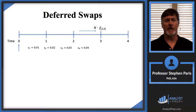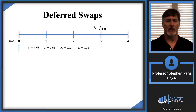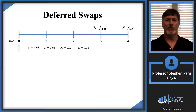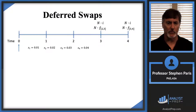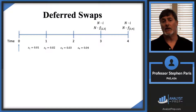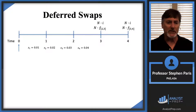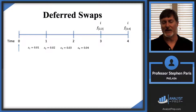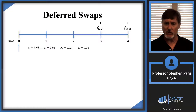At time three, the interest payment is the notional amount times the forward rate from time two to time three. At time four, it's the notional amount times the forward rate from time three to time four. We want to swap those for the notional amount times a fixed interest rate — the swap rate I. Since the notional amounts are the same and constant, they cancel off.